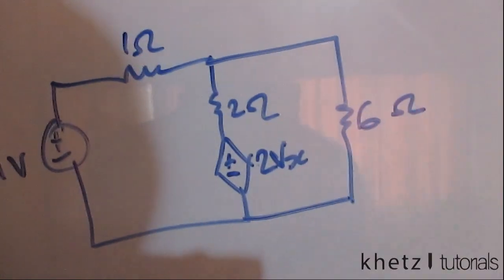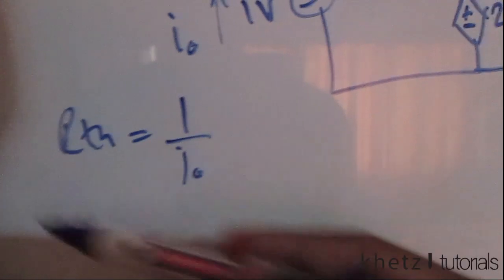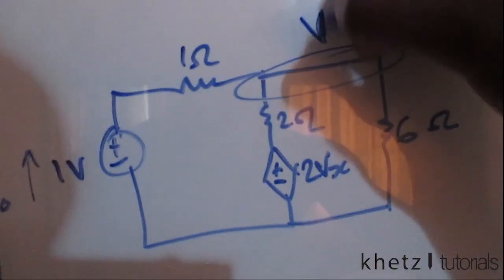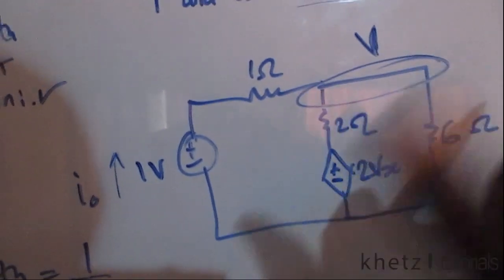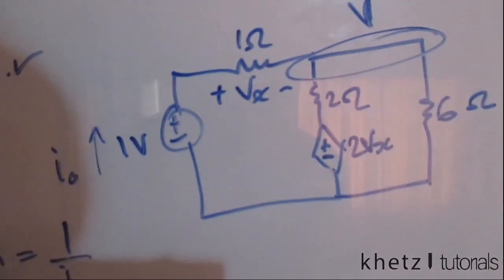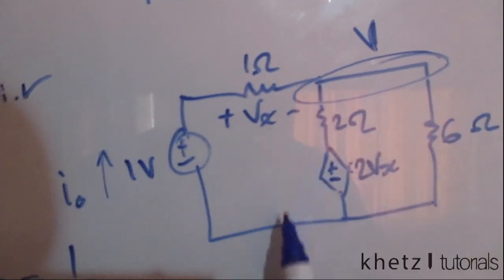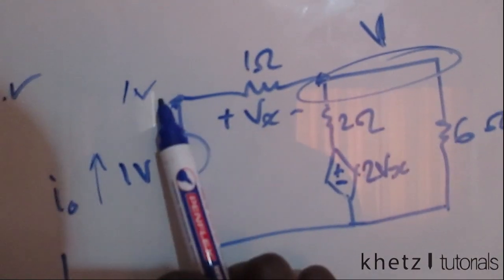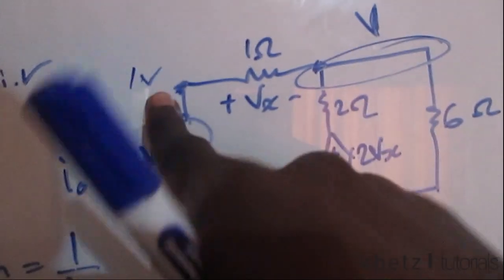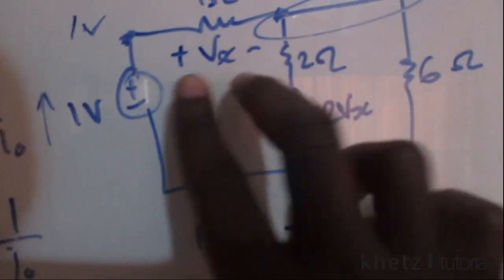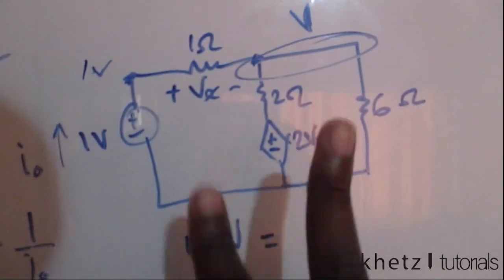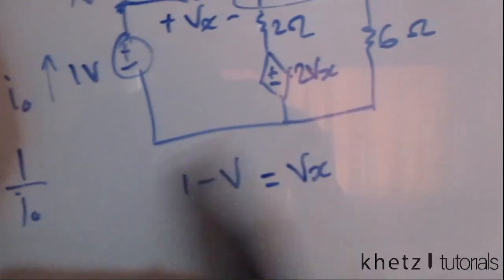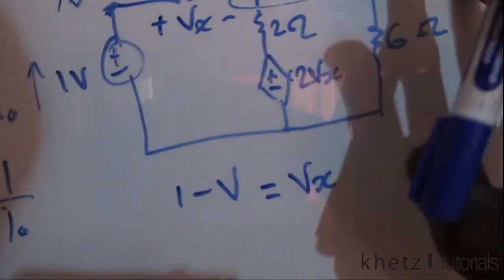From here we need to find io, which will give us Rth. Let's label the node voltage as v. We also have vx as given. We form a relationship: vx equals one minus v, because vx is the potential difference between the one-volt node and node v, with the positive terminal on the one-volt side.